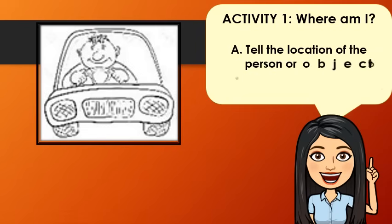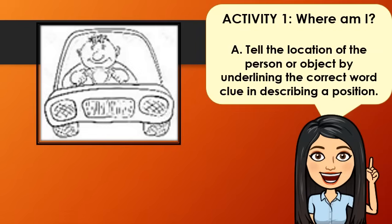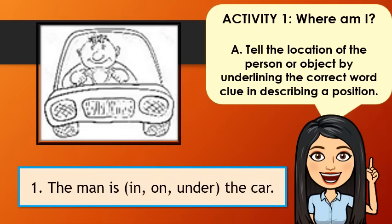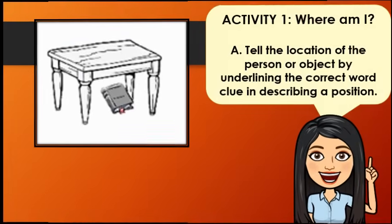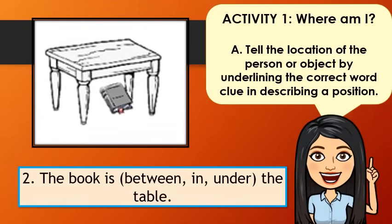Now, let's have some activities. Where am I? Tell the location of the person or object by underlining the correct word clue in describing a position. Number 1: The man is in, on, or under the car. Number 2: Tell the location of the book. The book is between, in, or under the table.